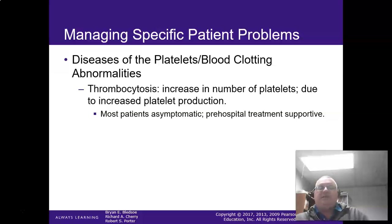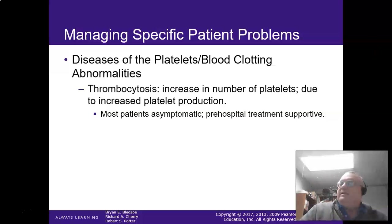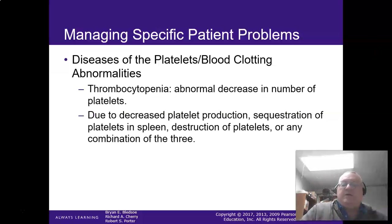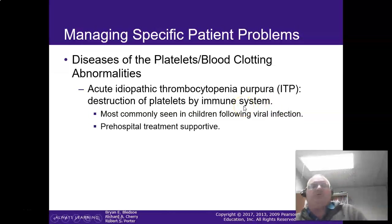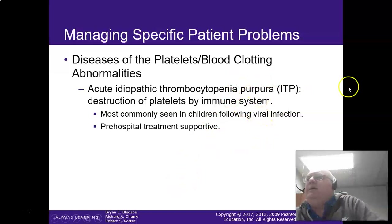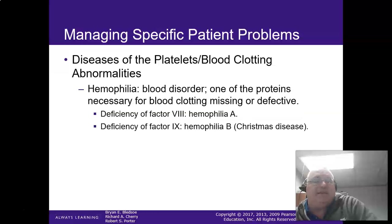Thrombocytosis is when you have an increased number of platelets. Most people survive these — they'll do plasma pheresis and usually do just fine. Thrombocytopenia is an abnormal decrease in platelets, usually because something is destroying them or the spleen is overactive. It's usually seen in children following a viral infection, and those ITP patients will develop purpura — nasty purple blotches all over — which usually means they've got a viral infection of some sort.